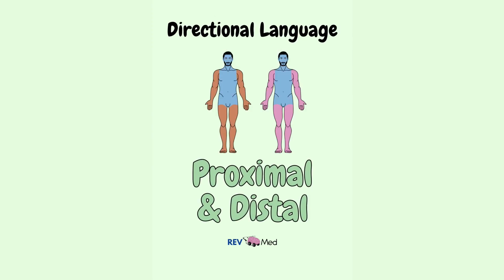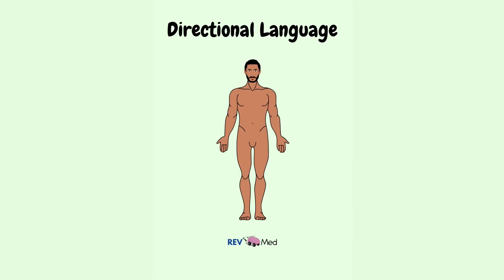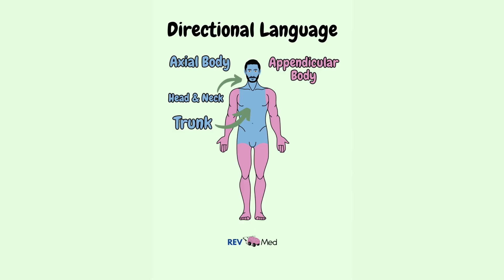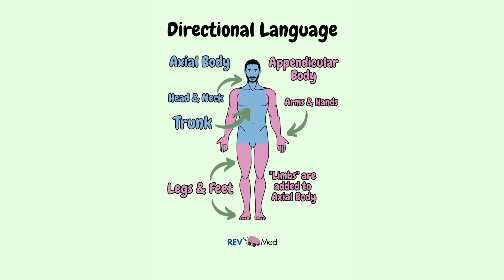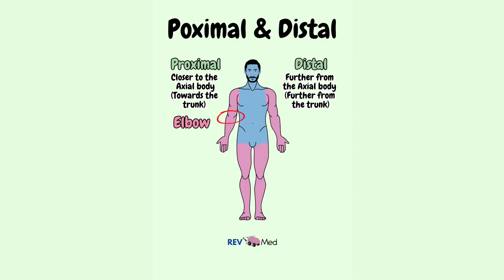Next, we'll discuss the terms proximal and distal. Just like we saw the midline, we now create a mental map of the axial body and the appendicular body. The axial body is the head, neck, and trunk. The appendicular body consists of the limbs added to our axial body. Proximal means closer to the axial body, towards the trunk — the core. Distal means further from the axial body, further from the trunk. For example, the elbow is proximal to the hand, or the hand is distal to the elbow.